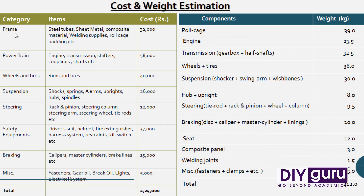In the first column we input the category of the component — for example, frame, power train, wheels and tires, suspension, steering, safety equipment, braking accessories, miscellaneous accessories — and then the details of items covered in each category, followed by the cost.